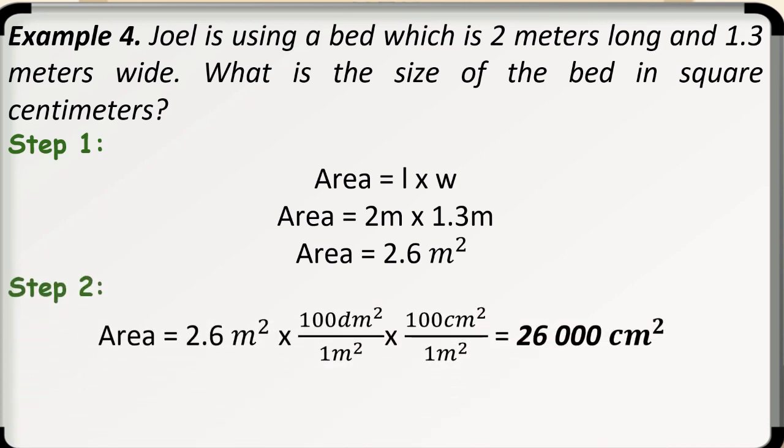Next step, we need to convert 2.6 square meters into square centimeters. So, we have area is equal to 2.6 square meters times the conversion factor 100 square decimeters is to 1 square meter times 100 square centimeters is to 1 square meter. So, therefore, our area is 26,000 square centimeters.